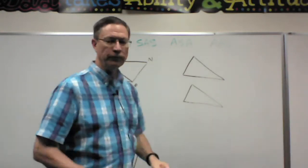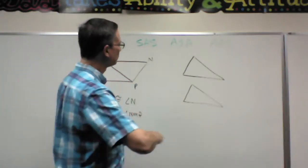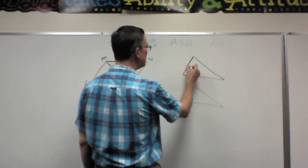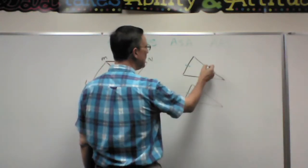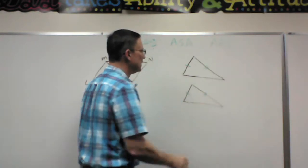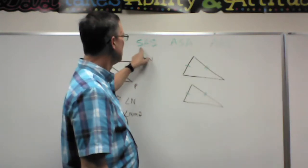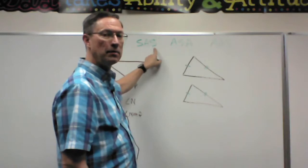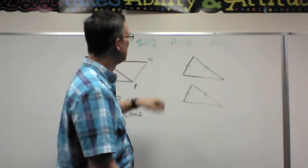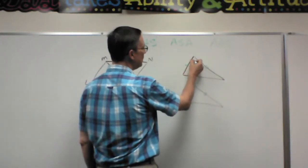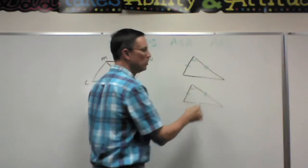So let me mark on here, if I knew that this side was congruent to this side and this side was congruent to this side, then the side angle side postulate tells me that I have to prove that this angle here is congruent to this one.